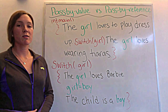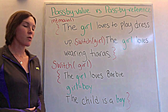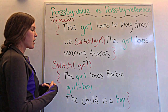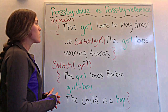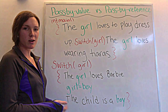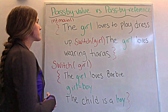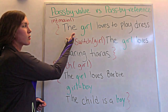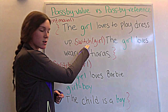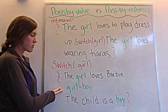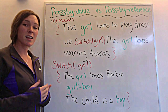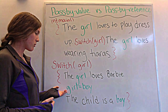We'll start with pass-by value, which here is our function switch girl. It just has a variable name, nothing else with it. Reading through the code: the girl loves to play dress up. Now I call my switch function, and it says the girl loves Barbies. I've now changed my variable from girl to boy.